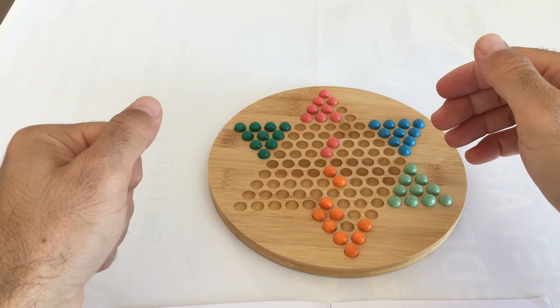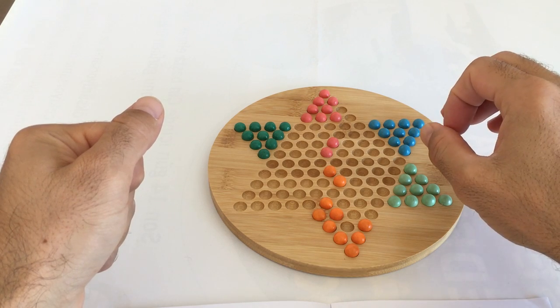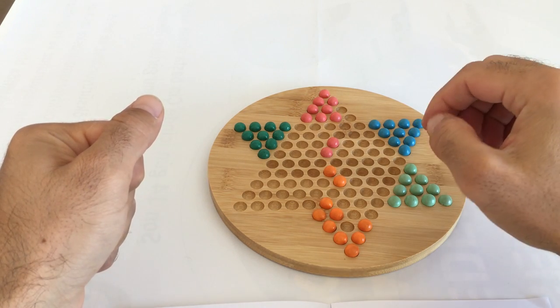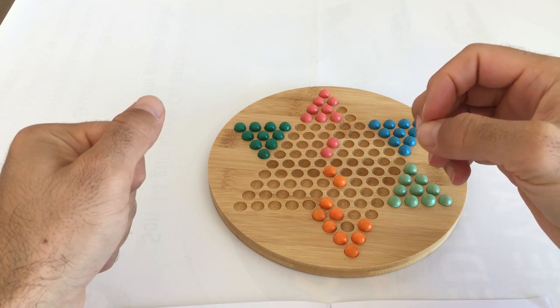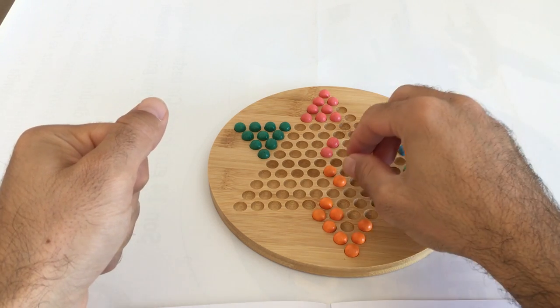The balls can move along the lines in any direction. Only one ball can be moved during each turn. But the ball can be moved as far as the jumping opportunities allow.